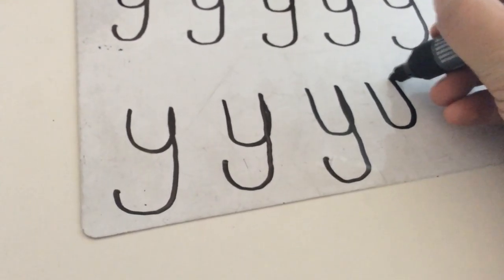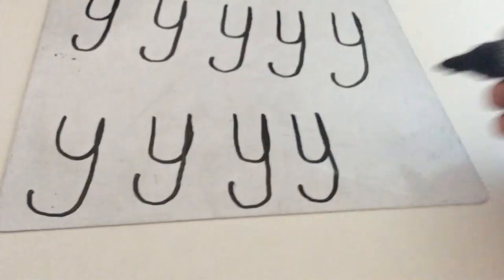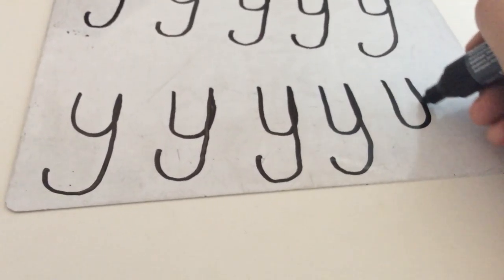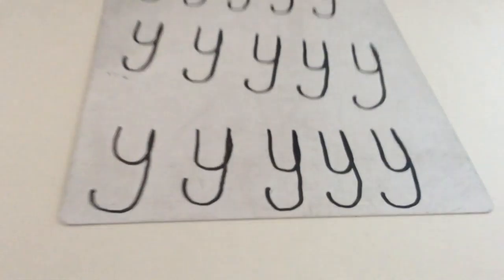Down, curve round and up, down, giving him a tail. And last one together. Down, curve round and up, down and give him a tail. Right then.